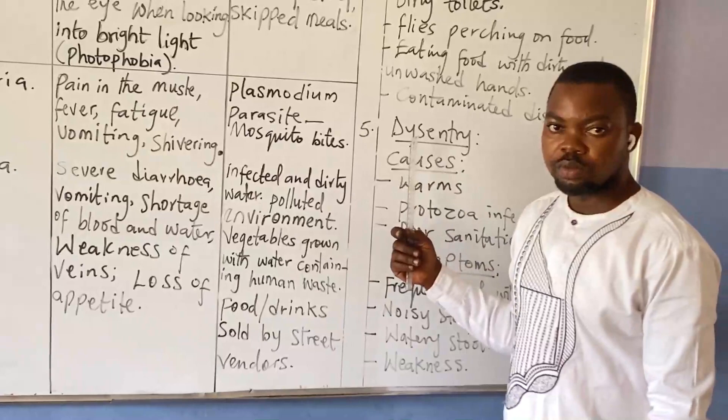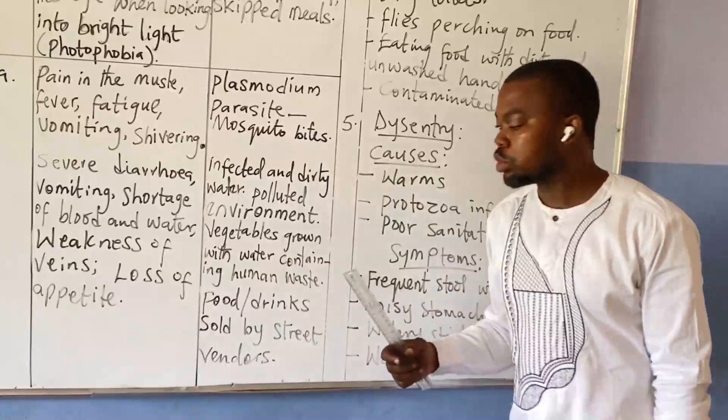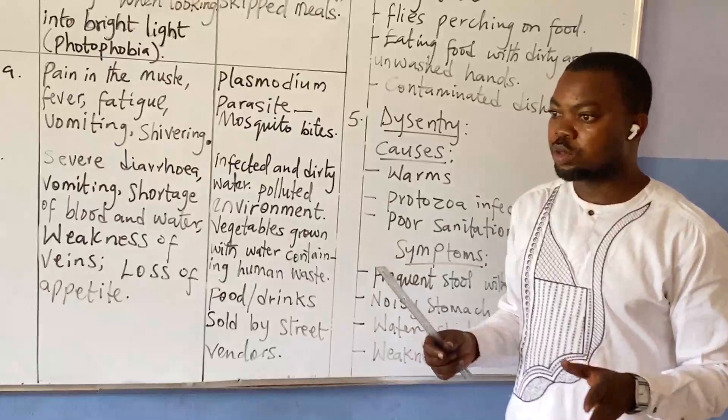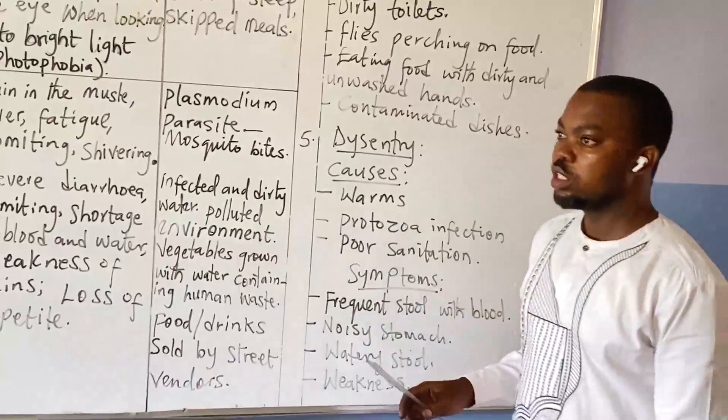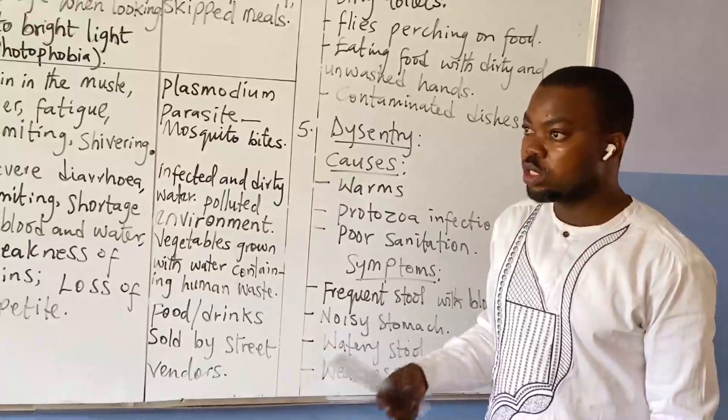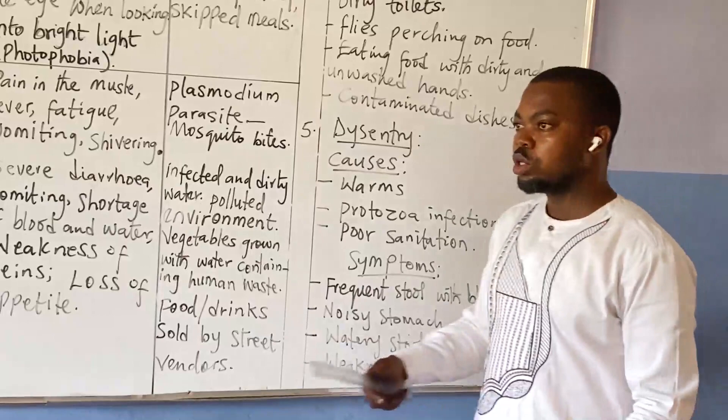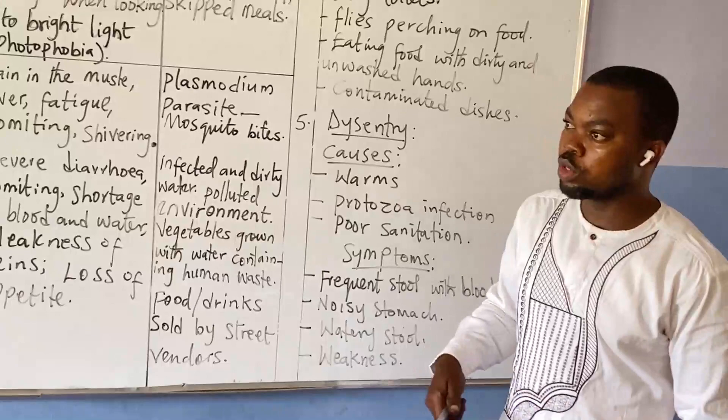Then we have dysentery. What are the causes of dysentery? We have wounds, we have protozoal infection — protozoal here is a parasitic organism which is microscopic. We have poor sanitation. All these are causes of dysentery. Dysentery can make one stool frequently with blood — that is blood diarrhea. Then, noisy stomach — you always hear the stomach turning with noise.